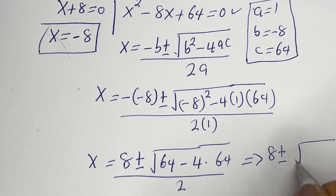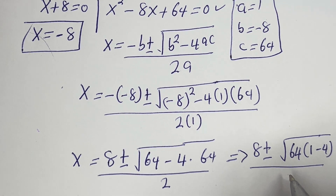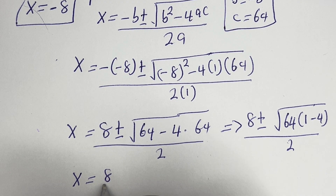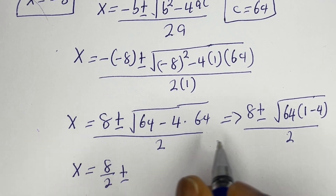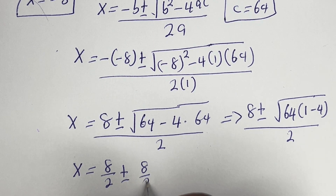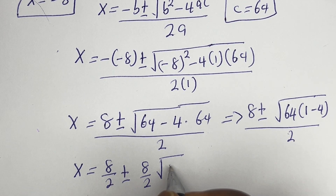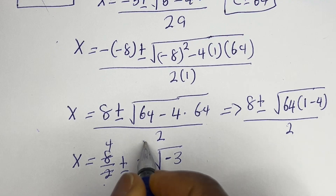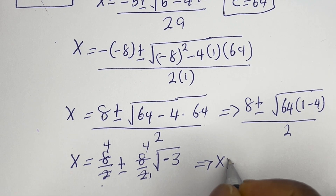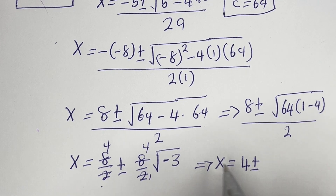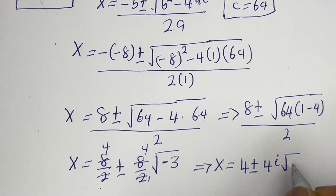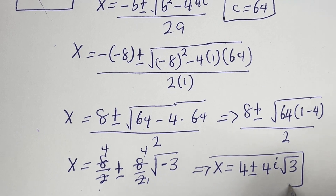This simplifies to s equals 8 over 2 plus or minus square root of 64(1 minus 4) over 2, giving s equals 4 plus or minus 4i root 3. Since square root of minus 1 is i, these are complex values of s from the first case.